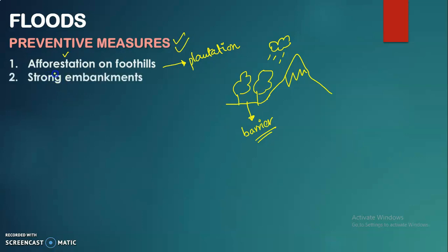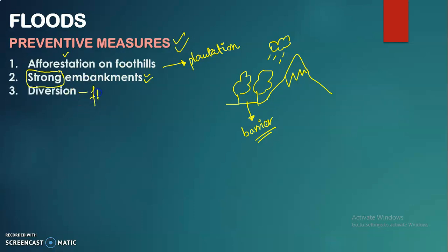The second preventive measure is strong embankments. As seen earlier, weak embankments increase flood impact, so we need to create strong embankments to prevent river water from eroding land and causing damage. The third measure is diversion — providing a different channel to redirect floodwater away from settlement areas toward a safer direction, securing populated areas.